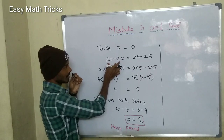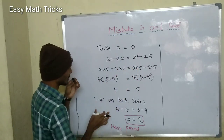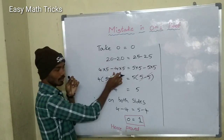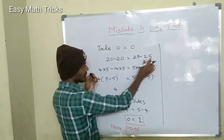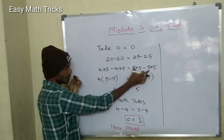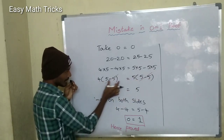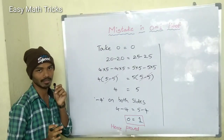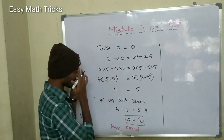Let me show you: 20 minus 20, 25 minus 25 — no problem. Let me show you here. 20 is 4 fives, here is 4 fives. Next, here is 5 fives, here is 5 fives. Now let's do the next step. Let me show you here how to cancel.